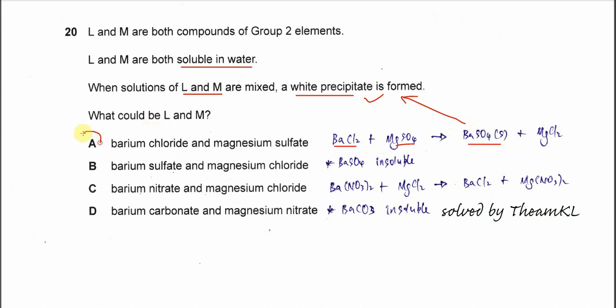So answer is A. Why can't B work? Barium sulfate and magnesium chloride, because at the first part this solution is not a clear solution, this is a precipitate. So it will not be soluble in water. So out.